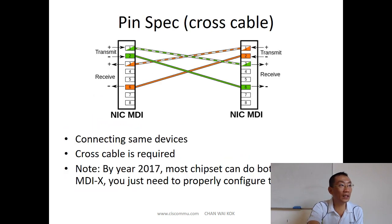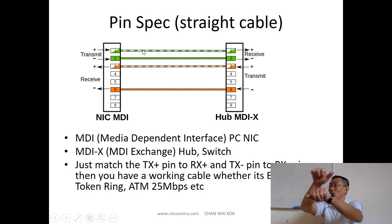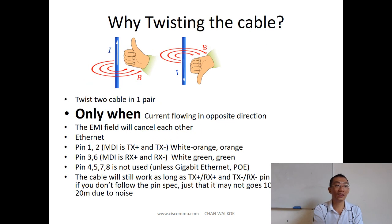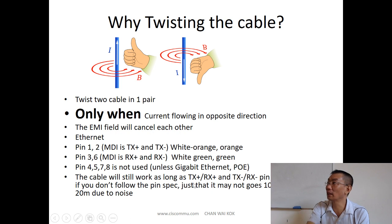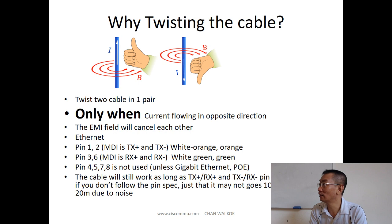You can see that the EMI field moves in opposite directions, so they cancel out each other. But if you do not follow the pin spec and pair the wires incorrectly, the cable may still work as long as the pins match. However, you won't get 100 meters — maybe only 20 or 30 meters — because the noise is much greater and the fields cannot cancel each other out.